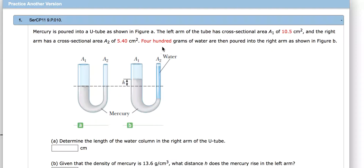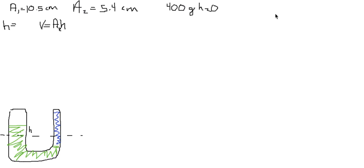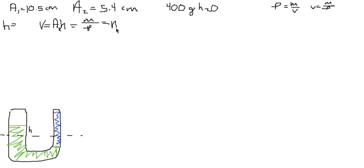We can find volume using the given mass and the density of water, which is 1 g/cm³. Using density equals mass over volume, we get volume equals mass over density. We can plug this in for V, giving us mass of water over density of water, which equals area of the right cylinder times the height of the water.